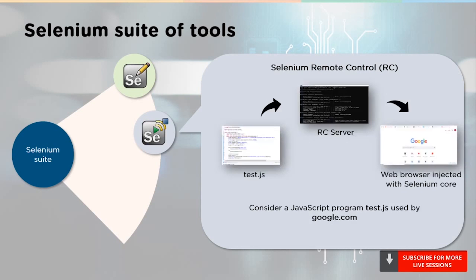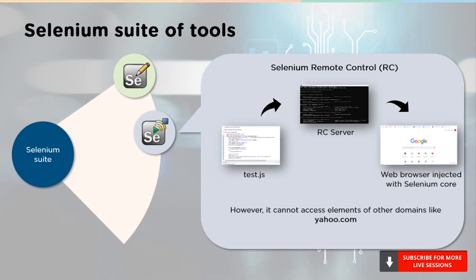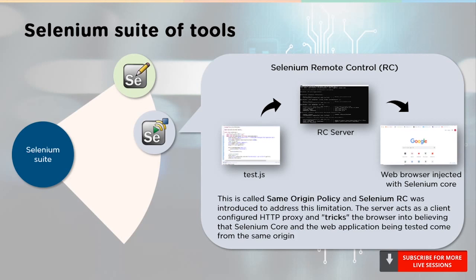Consider a typical JavaScript program, say test.js used by google.com. The program can access pages within the google.com domain, like google.com/mail or login. However, it cannot access elements of other domains like yahoo.com. So, local copies of Selenium core and the web browser have to be installed so that they belong to the same domain. The server acts as a client-configured HTTP proxy and tricks the browser into believing that Selenium core and the web application being tested came from the same origin.